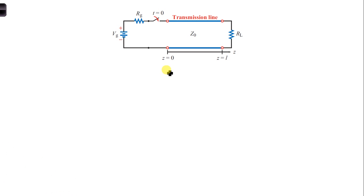So by the time the wave reaches the end of the transmission line, capital T seconds has elapsed, and T is given as 0.5 microseconds.